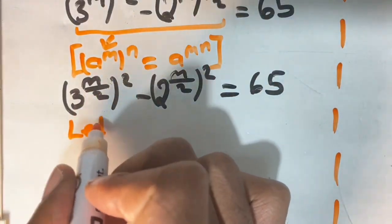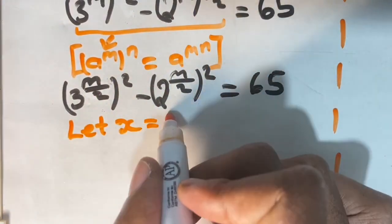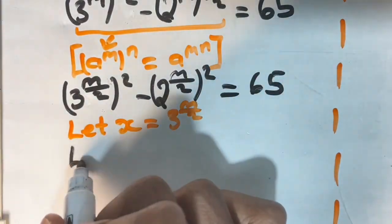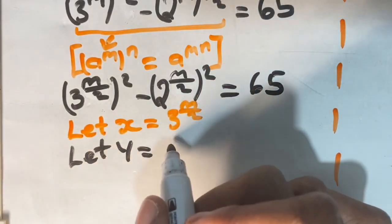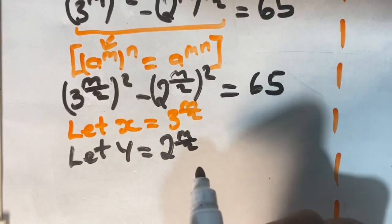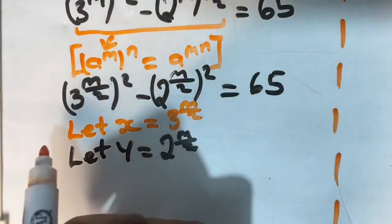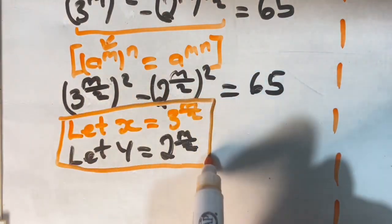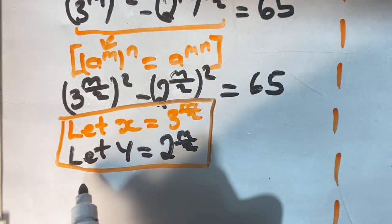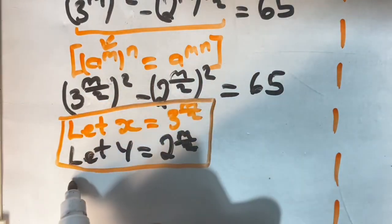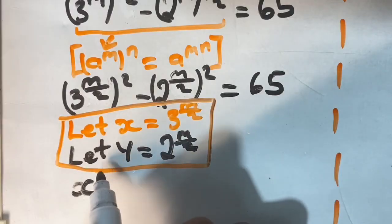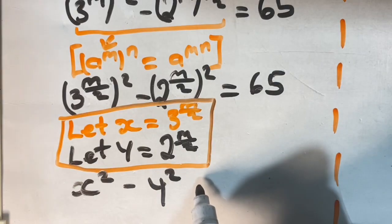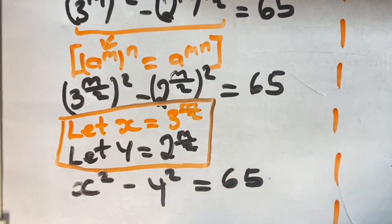Now we are going to represent what we have here in the form of variables. We're going to say let x equal 3 to the power of m over 2, and let y equal 2 to the power of m over 2. In just a bit you'll see these two variables play out very well in giving us our solution. So we have x squared minus y squared is equal to 65.